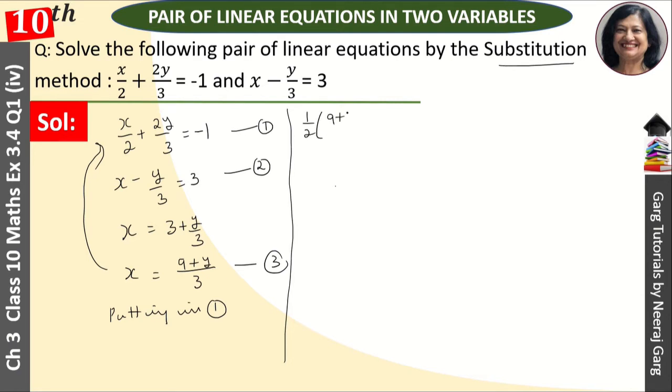Opening the bracket, this becomes (9 + y)/6 + 2y/3 = -1.